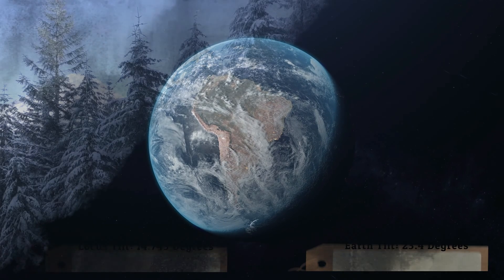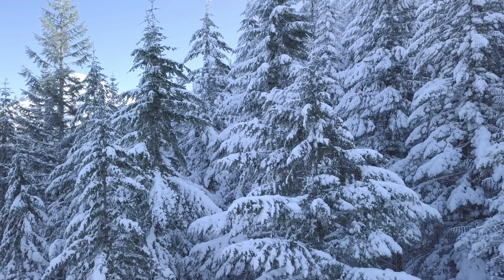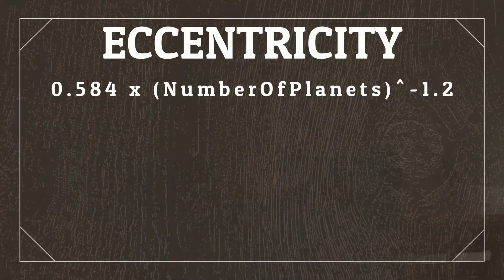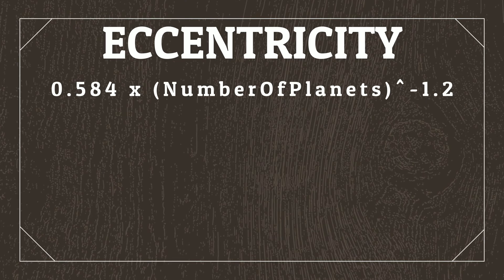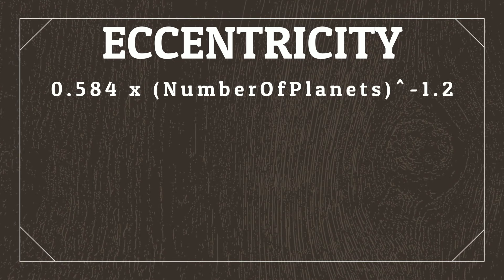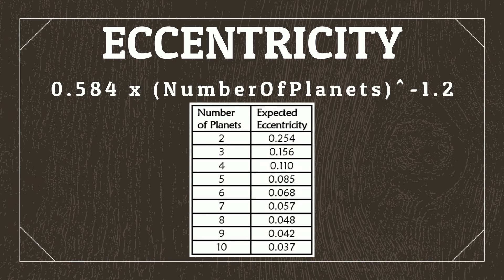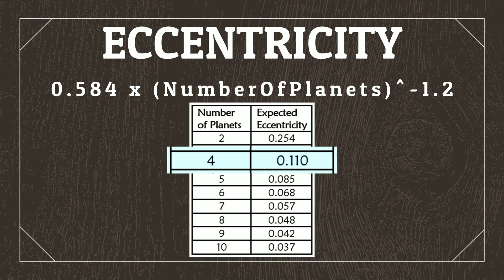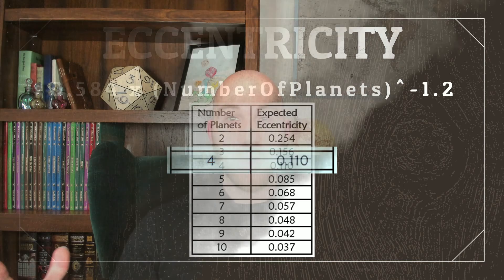Therefore, while the seasons will be longer than Earth, they won't be as severe. Now, remember I said that I didn't just pull Locusts' eccentricity number out of nowhere? Well, it turns out that there's an equation for what a planet's eccentricity will be based on the number of planets within the solar system. You can see based on this table that the eccentricity we've chosen for our planet is the expected eccentricity for a system with four planets, which means we've got three more planets to make. Thankfully, the process is very straightforward, and we can use the same process for all of our planets.